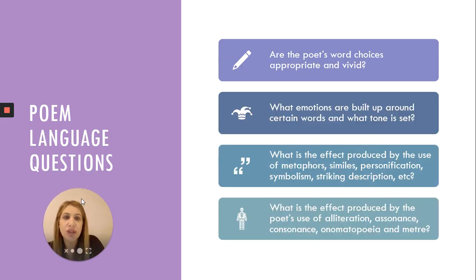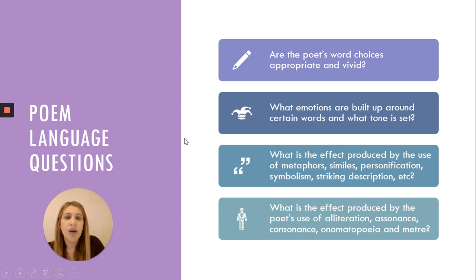Looking at some language questions: are the word choices appropriate and vivid? What emotions have built up around certain words, and what tone is set? What is the effect produced by the use of metaphor, similes, personification, symbolism, and striking description? What's the effect produced by the poet's use of alliteration, assonance, consonants, onomatopoeia, and metre?